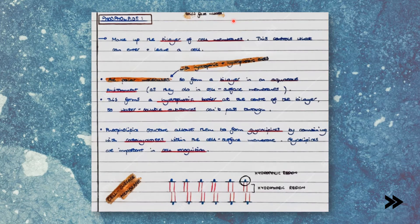Next, we have phospholipids, which make up the bilayer of cell membranes, including membranes of organelles in eukaryotes. This controls what can enter and leave a cell or organelle. Phospholipids are polar molecules with hydrophilic and hydrophobic regions, meaning that they form a bilayer in an aqueous environment, as they do in cell membranes. This forms a hydrophobic barrier at the centre of the bilayer, which prevents water-soluble substances from passing through. Their phospholipid structure also allows them to form glycolipids by combining with carbohydrates within the cell surface membrane. Glycolipids are important in cell recognition. Here we have a diagram of the phospholipid bilayer, with aqueous environments on either side.